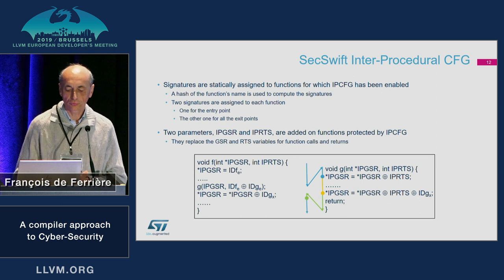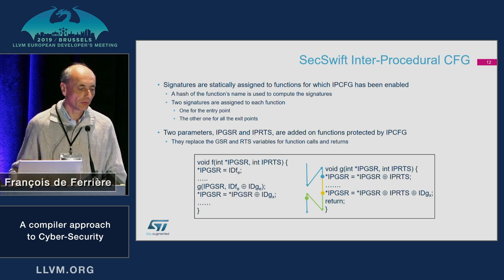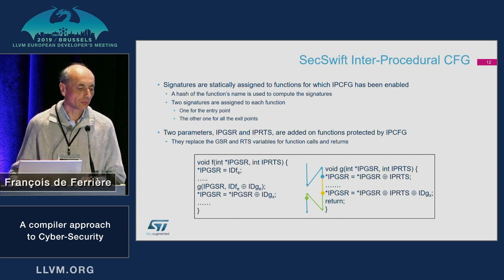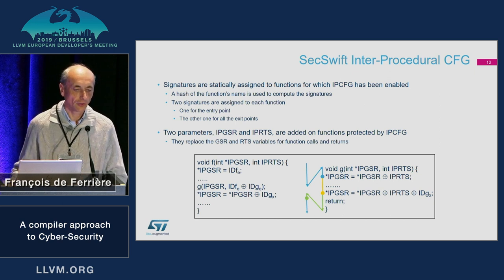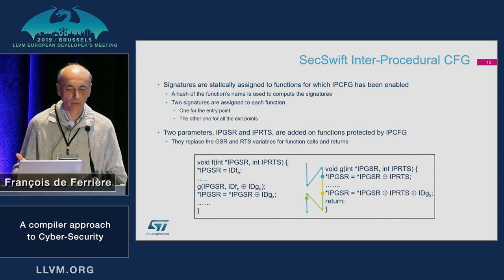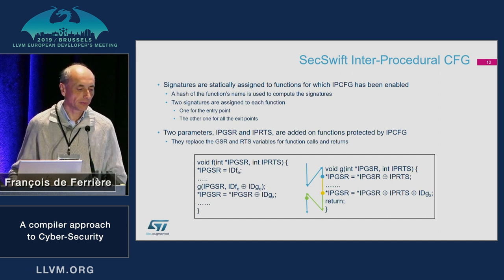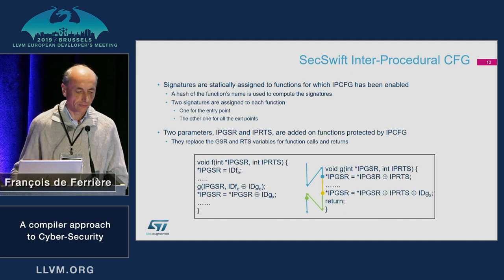We extended this control flow checking from the basic block level to the call graph level. For this, we defined two signatures for each function, based on a hash of the function name: a signature for the entry of the function and a signature for the exit points, so we can check that the whole body of the function has been executed and that we don't leave the function before the end of its execution.